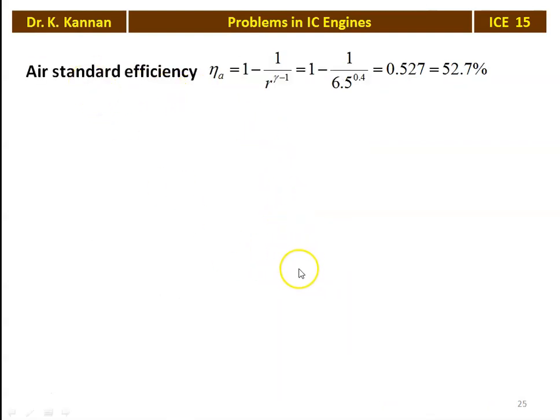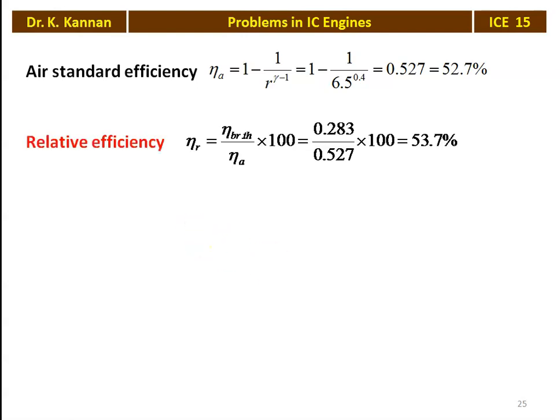Air standard efficiency based on the Otto cycle: η_A = 1 − 1/r^(γ−1) = 1 − 1/6.5^0.4 = 0.527, which is 52.7%. Relative efficiency = brake thermal efficiency / air standard efficiency × 100 = 0.283 / 0.527 × 100 = 53.7%. All parameters for problem 6 have been calculated.